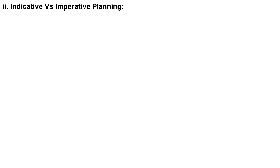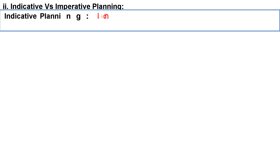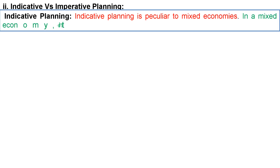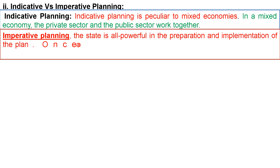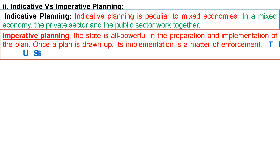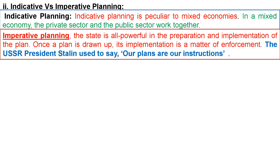Indicative versus imperative planning: Indicative planning is peculiar to a mixed economy, where the private sector and the public sector work together. Imperative planning: the state is all-powerful in the preparation and implementation of the plan. Once a plan is drawn up, it is implemented as a matter of enforcement, as in the USSR.